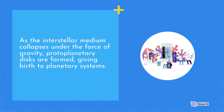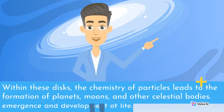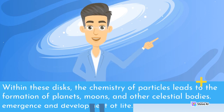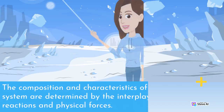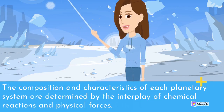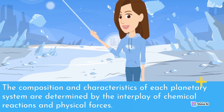As the interstellar medium collapses under the force of gravity, protoplanetary disks are formed, giving birth to planetary systems. Within these disks, the chemistry of particles leads to the formation of planets, moons, and other celestial bodies. The composition and characteristics of each planetary system are determined by the interplay of chemical reactions and physical forces.